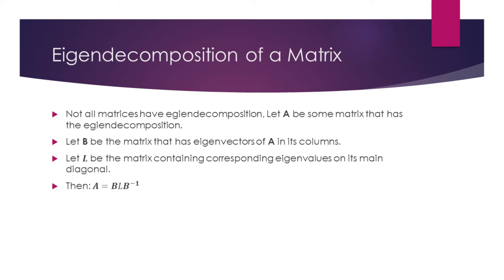Not all matrices have eigendecomposition. Let A be the matrix that can be eigendecomposed. Let B be the matrix columns of which are made up by the eigenvectors of A. Let L be the matrix containing corresponding eigenvalues on its main diagonal. Then the eigendecomposition of the matrix A is given by the formula on the bottom of this slide.